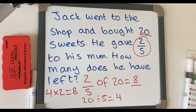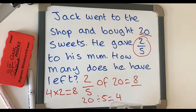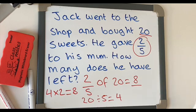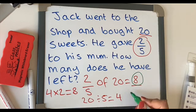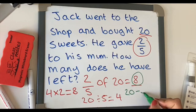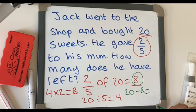But hang on, we've not quite finished just yet. We now need to figure out how many sweets he has left. So his mom has taken 8 of his sweets. So if you do 20 take away 8 equals, let's do it together.